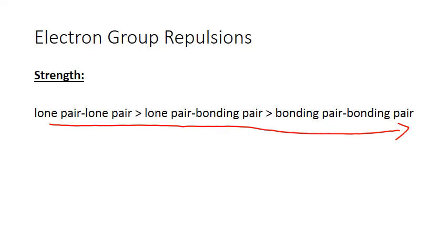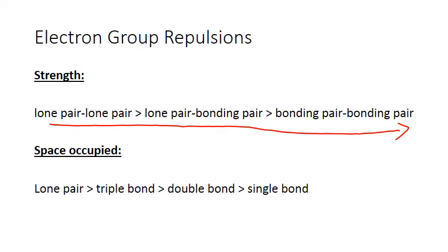The strength of these repulsions reflects different amounts of space occupied by the electron groups around that central atom. Lone pairs are actually able to spread out a little bit more, and as a result they push more strongly on the groups around them. Triple bonds are also spread out — the atoms might be closer together, but the shared electrons are pushed a little farther out. Double bonds occupy a little bit less space than triple bonds but more than single bonds, and single bonds occupy the least amount of space, so they have the smallest repulsion power.